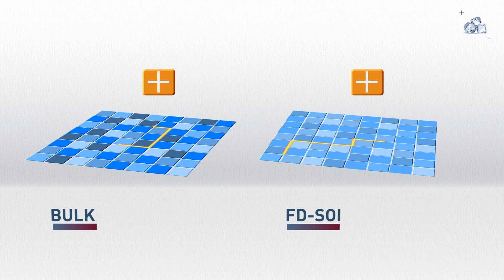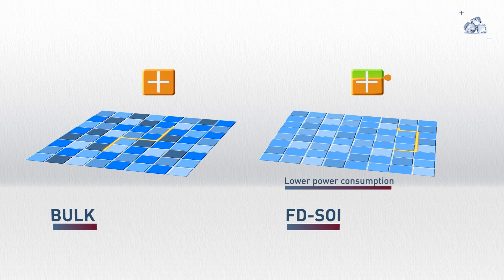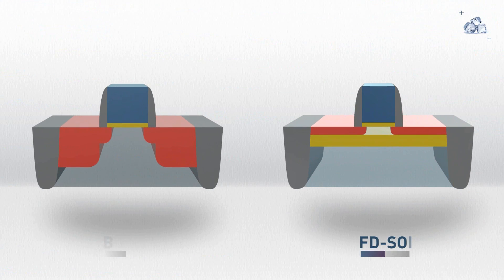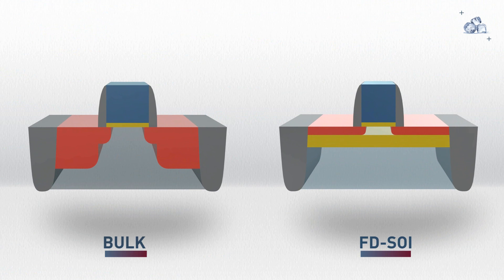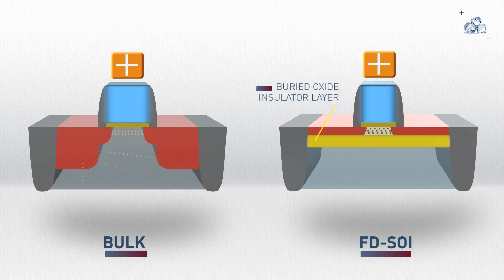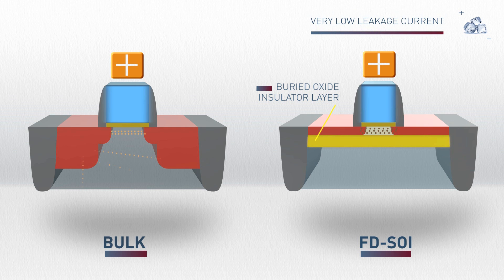An FDSOI chip is able to operate at a lower voltage than its bulk counterpart, while delivering the same level of performance. This makes the FDSOI chip cooler with lower power consumption. The insulator layer efficiently confines the electrons when flowing from the source to the drain, drastically reducing the leakage currents from the channel to the substrate.